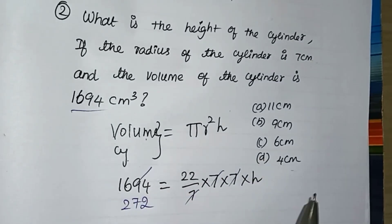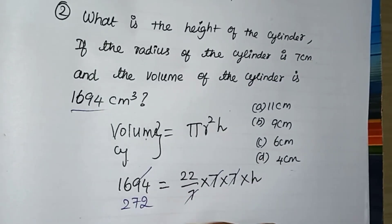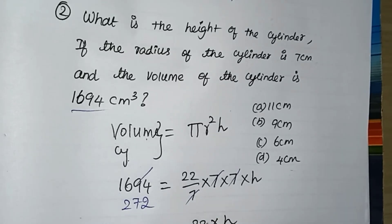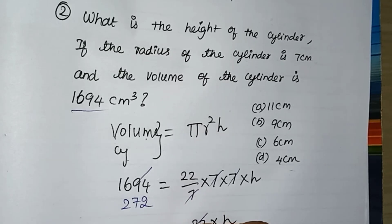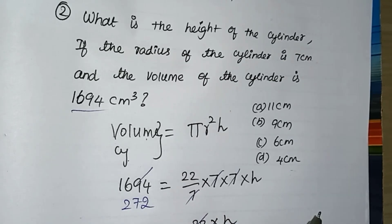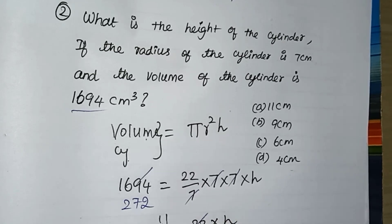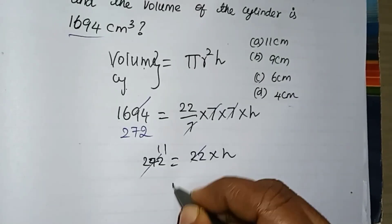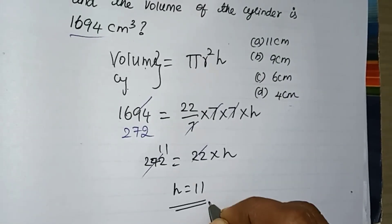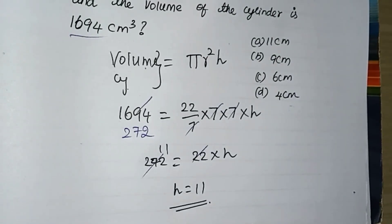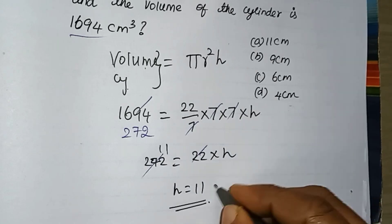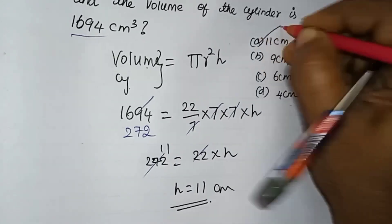We get 272. So 272 equals 22 into height. Then 272 becomes 242 after cancellation. Cancelling the values of the cylinder, the height comes out to be 11 cm. The answer is 11 cm.